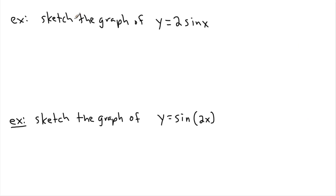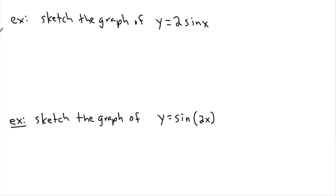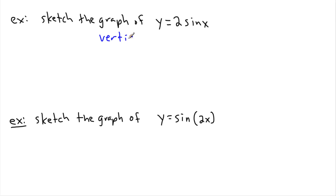Now let's look at a specific example. We have y equals 2·sin(x). There's a 2 in front of sin(x), and just like we said, something in front of f(x) is a vertical stretch by a factor of p units — so this is a vertical stretch by 2 units.